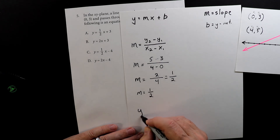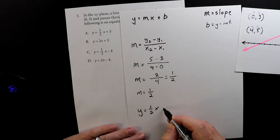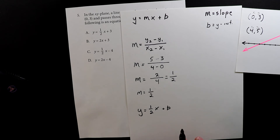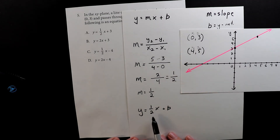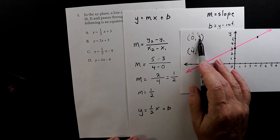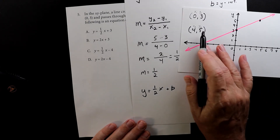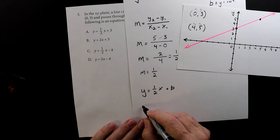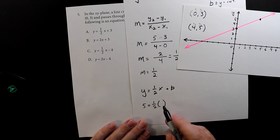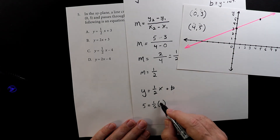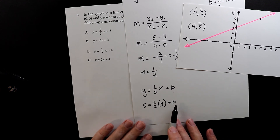Now we have y equals one-half x plus b, since m equals one-half. We need to find out what b equals. We have two points we could plug in: x equals 0 with y equals 3, or x equals 4 with y equals 5. Let's use the second one. I'll plug in 5 for y: 5 equals one-half times 4 plus b. Here b is the unknown we need to find.